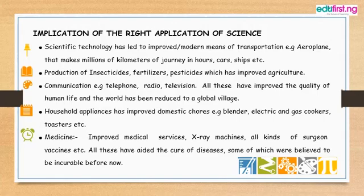The implications of the right application of science: first, scientific technology has led to improved and modern means of transportation, such as the aeroplane, that makes journeys of millions of kilometers possible in hours. Second, the production of insecticides, fertilizers, and pesticides has also improved agriculture.